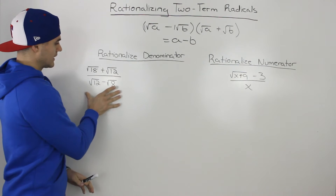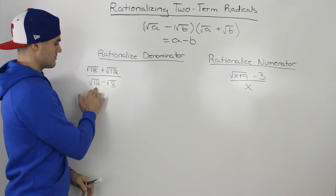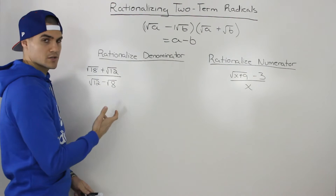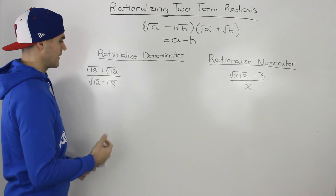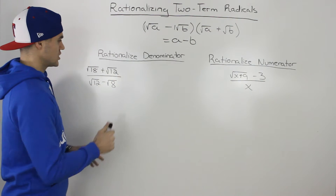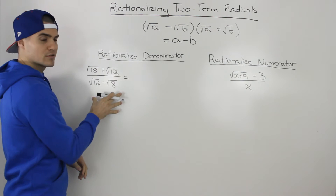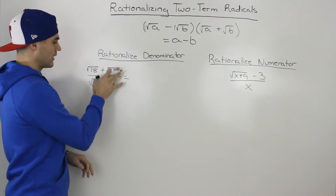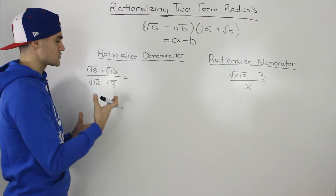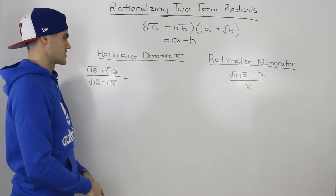Now, just by looking at this initially, you would think that you'd multiply it by the conjugate of the denominator — root 12 plus root 8 — and that would be correct. However, my suggestion is, if you can, always simplify whatever radicals you have into mixed radicals first. It'll make your life easier in the end.